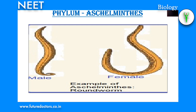Diseases caused by Aschelminthes: Ascaris (giant intestinal roundworm) is an endoparasite of the small intestine of humans and causes ascariasis. Wuchereria (filarial worm) is an endoparasite in the lymphatic vessels and lymph nodes of humans and causes elephantiasis in the legs, arms, scrotum, etc. Ancylostoma (hookworm) is an endoparasite in the small intestine of humans and causes ancylostomiasis.